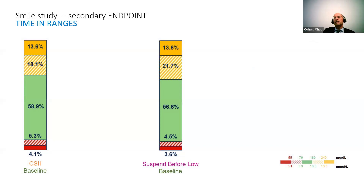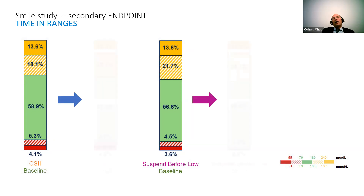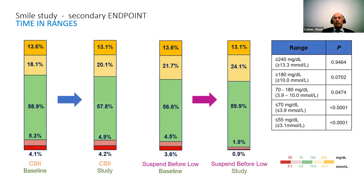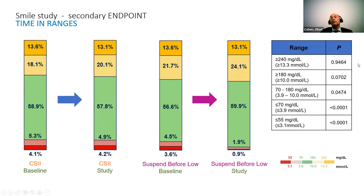This is from the SMILE study — a study on people with high risk of hypoglycemia who used only the suspend-before-low feature of the 640G, randomized against those continuing regular pump therapy. The result is clear: hypoglycemia almost disappeared for those who had a lot of hypoglycemia at baseline and switched to the suspend technology. But hyperglycemia remained. So suspending basal insulin when glucose is predicted to go low can prevent hypoglycemia, but we want to go further.